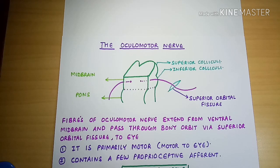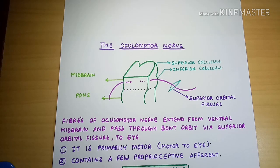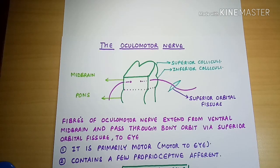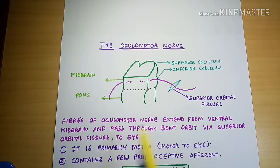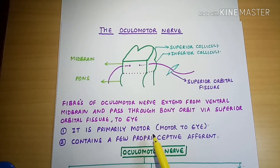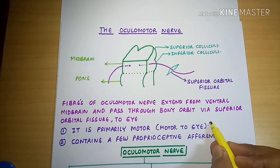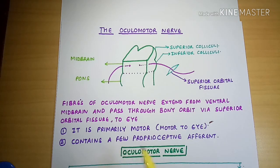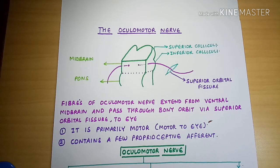We have to keep in mind that four muscles out of six are supplied by the oculomotor nerve — the superior, middle, and inferior rectus, and the inferior oblique muscles. The fibers of the oculomotor nerve extend from the ventral midbrain and pass through the bony orbit via the superior orbital fissure to the eye. The oculomotor nerve is primarily a motor nerve, and it contains a few proprioceptive afferent fibers also.